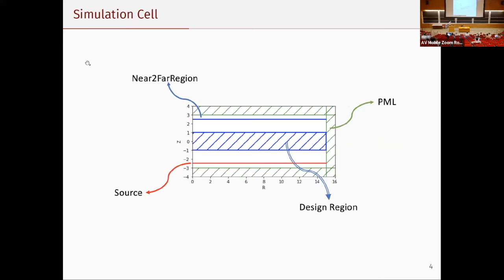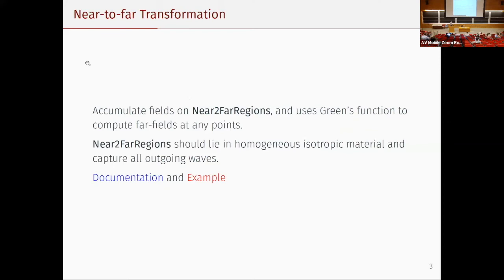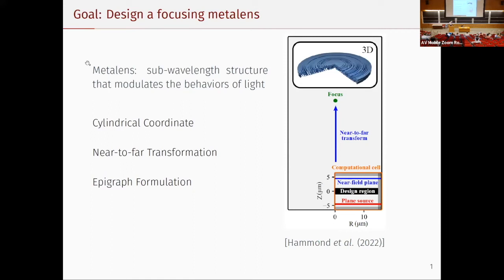Originally we'd have a large 3D cell encompassing our design, sources, and focus points. Now we can reduce it to just a 2D slice that's short in the Z direction. The thin line is our near-to-far region that does the transformation for us. It's a pretty clear picture of what we do compared to the original approach of needing the large cell.